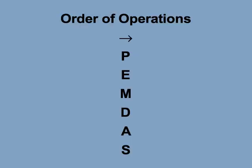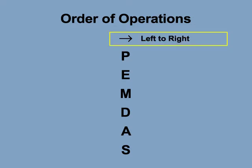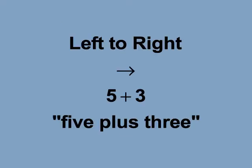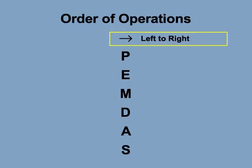The order of operations is a rule, or convention, that ensures the same result is obtained for any numerical expression. The first rule is to operate on numbers from left to right. This expression is read from left to right as 5 plus 3, not 3 plus 5. All expressions are always read from left to right.